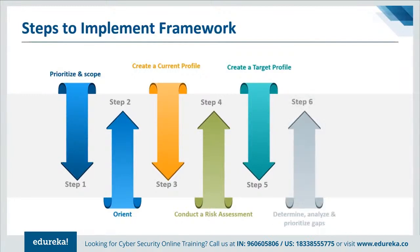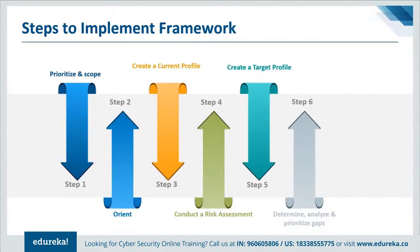Step six is to determine, analyze, and prioritize gaps. The organization compares the current profile and the target profile to determine gaps, then creates a prioritized action plan to address those gaps reflecting mission drivers, costs, benefits, and risks to achieve the outcomes in the target profile. The organization determines resources — including funding and workforce — necessary to address the gaps. Using profiles in this manner encourages informed decisions about cybersecurity activities and enables cost-effective targeted improvement.